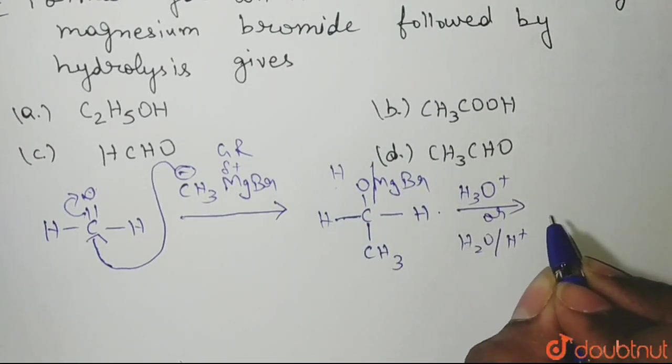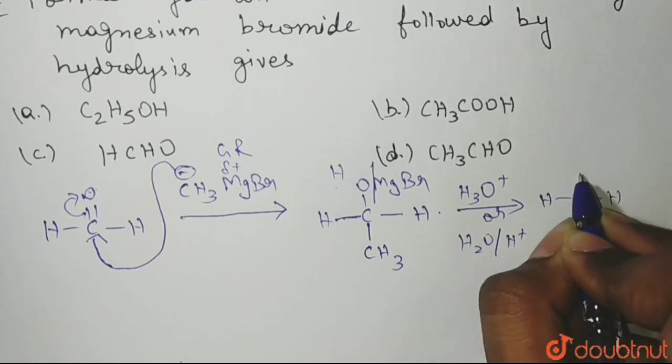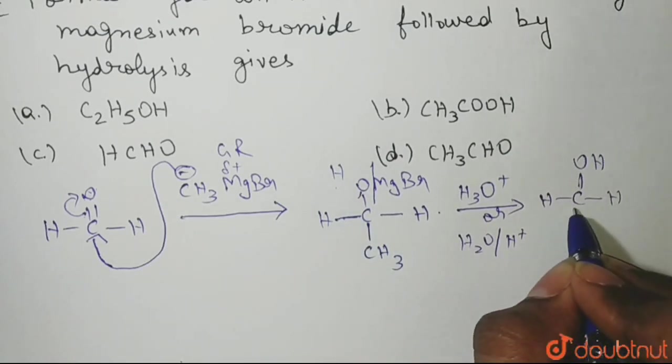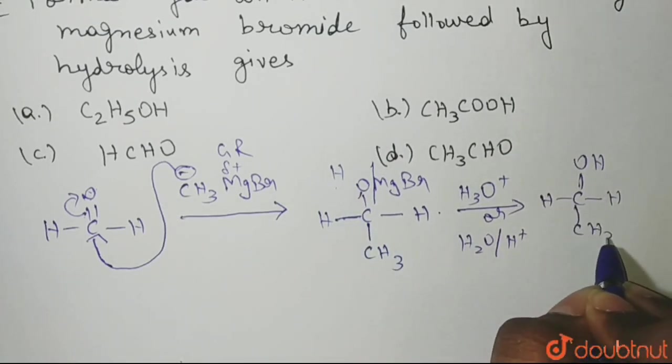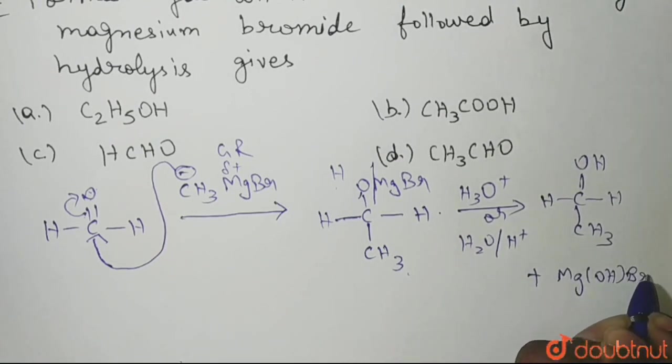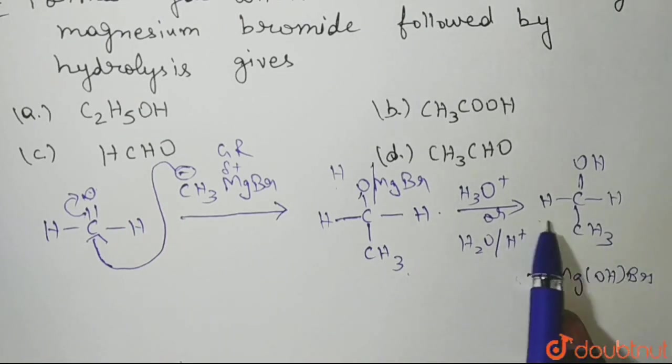So what you will get? The product you will get here is H-CH-OH, H will come to oxygen, and here you will get CH3. And plus what else will be formed? It will be Mg(OH)Br, that is magnesium hydroxide bromide will be formed.